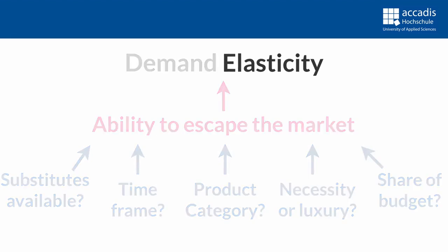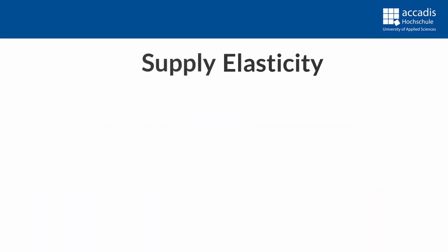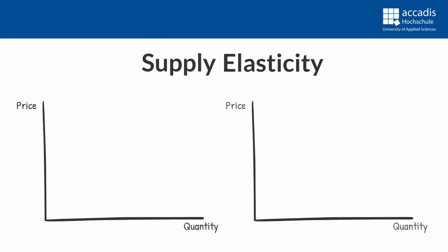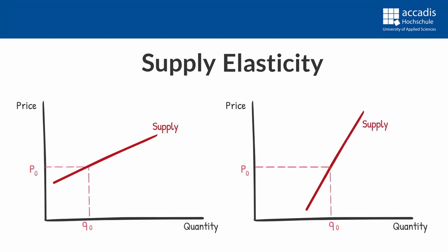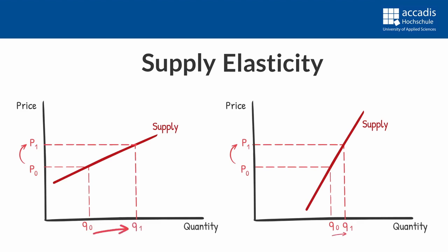So that's the elasticity of demand, and we can do the same analysis for the supply side. Just like with demand, the slope of the supply curve can tell us a lot about supply elasticity. When we have a steep supply curve, a small price increase will only result in a slight increase in quantity supplied. However, with a flatter curve, a similar price increase will trigger a much larger quantity reaction. So on the supply side, a flatter curve indicates higher elasticity as well.